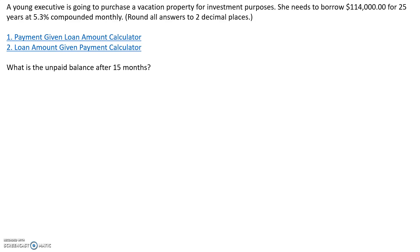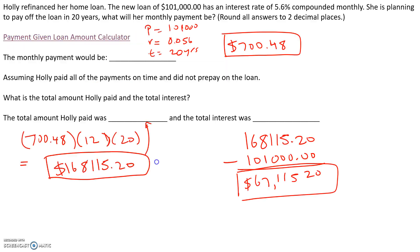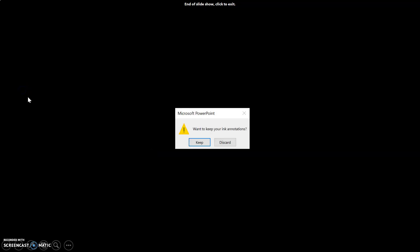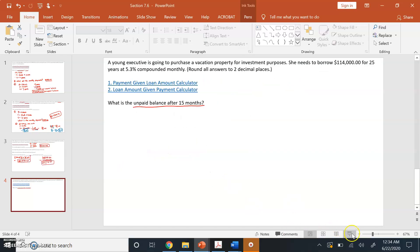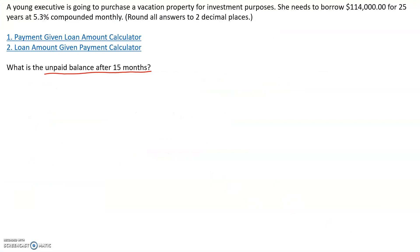A young executive is going to purchase a vacation property for investment purposes. She needs to borrow $114,000 for 25 years at 5.3% compounded monthly, which means she's making monthly payments. The question is, what is the unpaid balance after 15 months? We're going to split this problem up into two different parts. In the first part, we need to figure out what her monthly payments are.